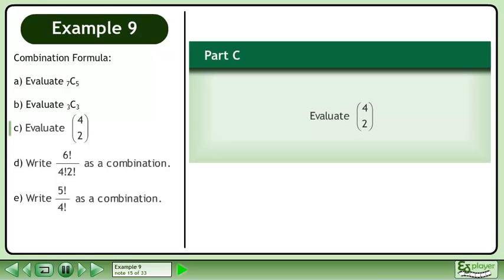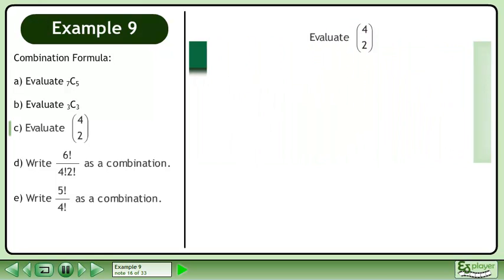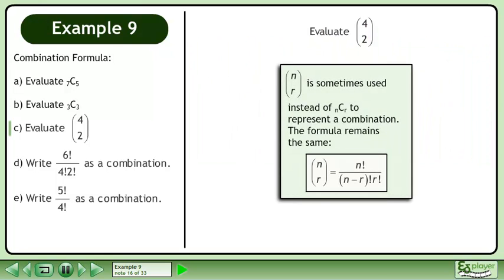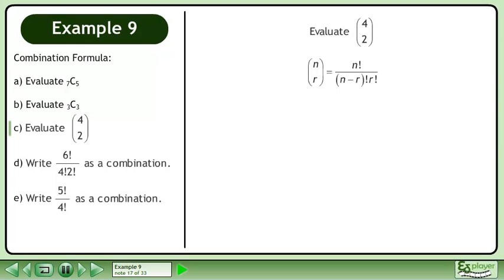In Part C, evaluate 4 choose 2. Note that n over r in brackets is sometimes used instead of nCr to represent a combination. The formula remains the same: n choose r equals n factorial over n minus r factorial times r factorial. Rewrite the combination formula.